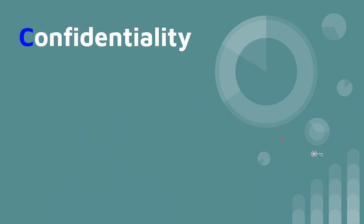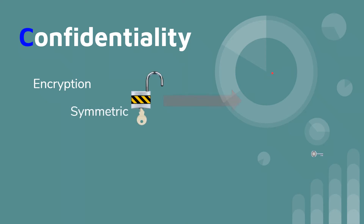The first service is confidentiality — the C in our CANRA acronym. Confidentiality can be achieved through encryption using either asymmetric or symmetric cryptography. With symmetric, it's fairly easy — you just make sure you're using the same key when you send the message.